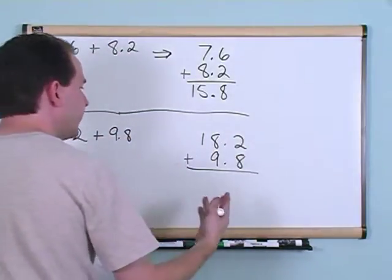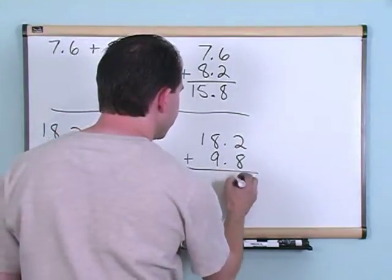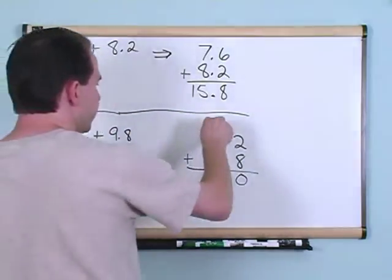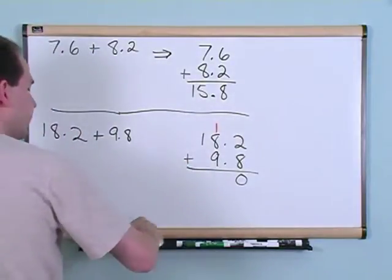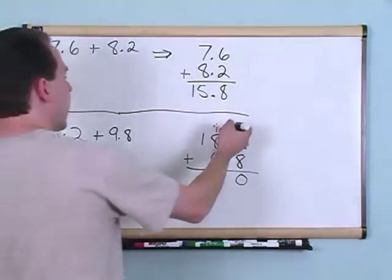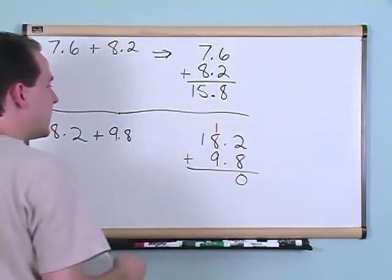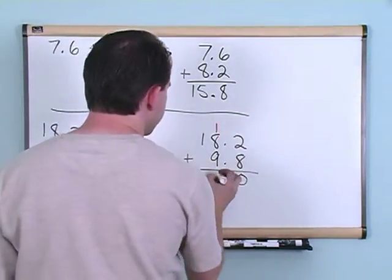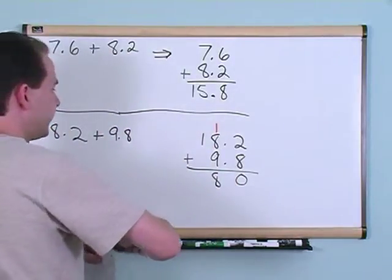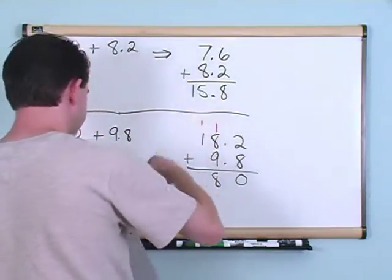8 plus 2 gives you 10. But 10 is too big to write down here, so I'm going to put the 1 up in the next column on top. 8 plus 1 gives me 9, plus another 9 gives me 18, so I put an 8 down and carry the 1 over to the next column.